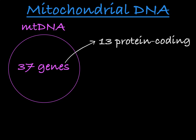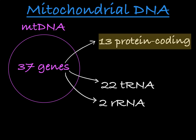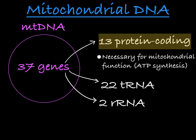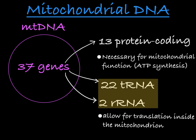13 of these genes encode proteins, 22 encode tRNAs, and 2 encode rRNAs. The protein-coding genes encode proteins that help the mitochondria function, primarily in the process of ATP synthesis. The tRNAs and rRNAs allow translation to take place in the mitochondria.